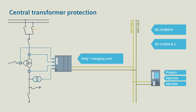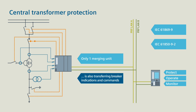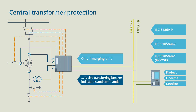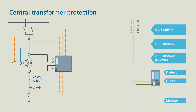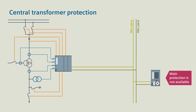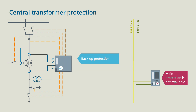Another benefit: digital information, for example breaker indications and breaker commands, can also be transferred via the process bus with the CProtek 5 merging units using GOOSE. And finally, if the main protection is not available, the CProtek 5 merging unit handles the backup protection tasks.